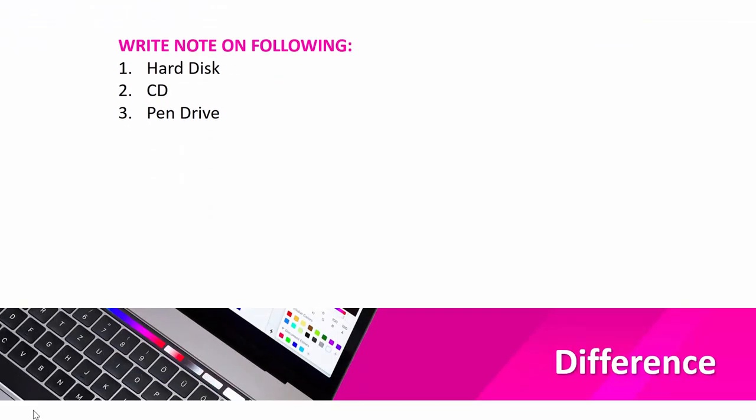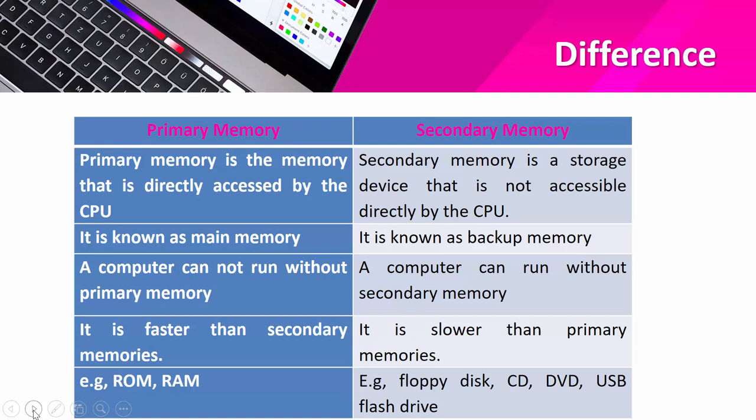Now let me explain the difference between primary memory and secondary memory. Primary memory is the memory that is directly accessed by the CPU. Secondary memory cannot be directly accessed by the CPU — data from secondary memory must first come into primary memory, and then the CPU can access it. Primary memory is also known as main memory, while secondary storage is also known as backup memory.